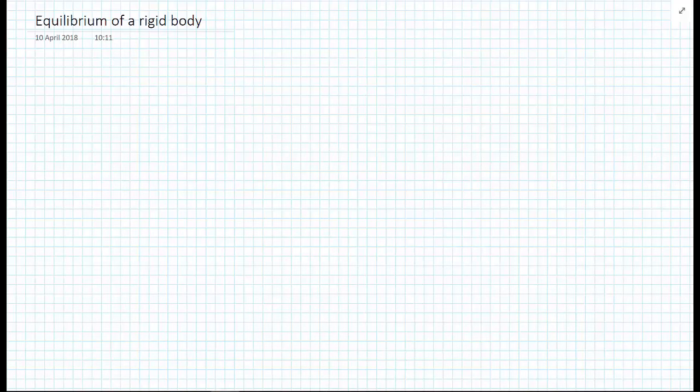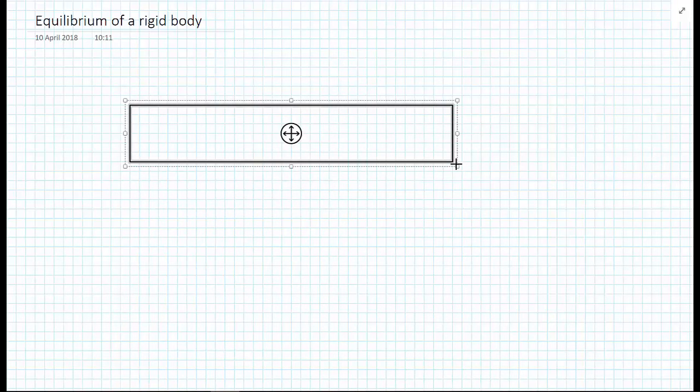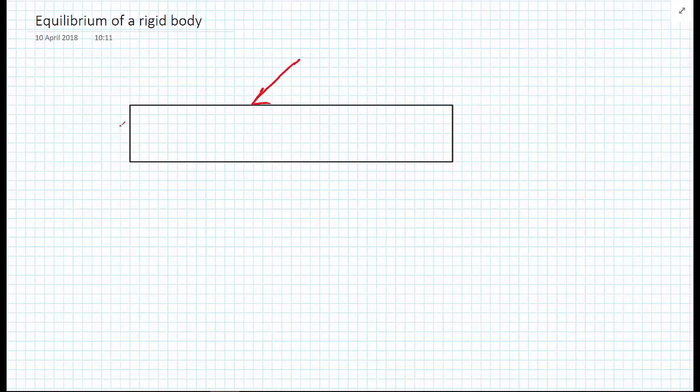We can imagine a rigid body, and I can draw it as a rectangle, but it could be any kind of rigid body. This rigid body can be subjected to all manner of forces on it. And we want to know, is this body in equilibrium or not?